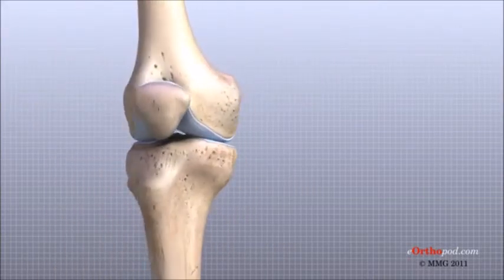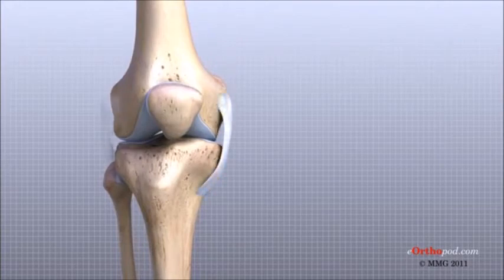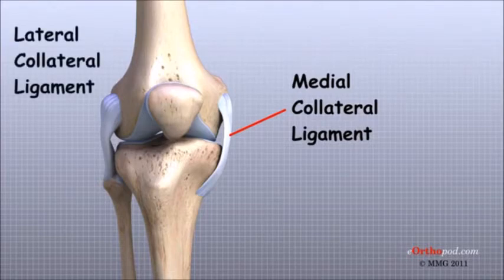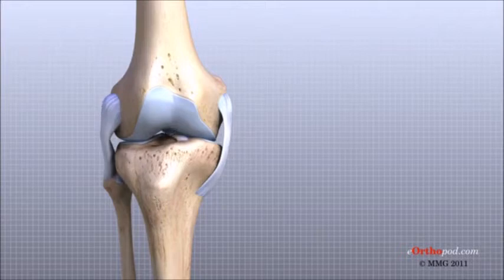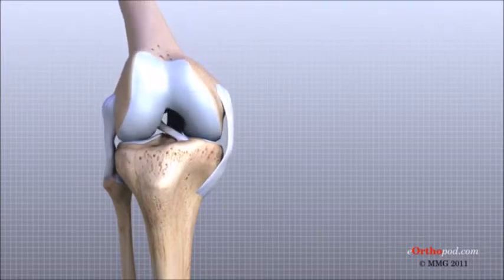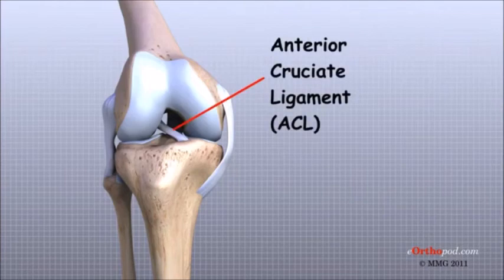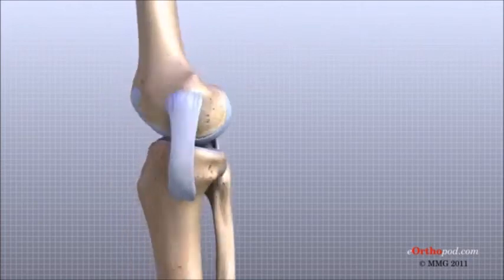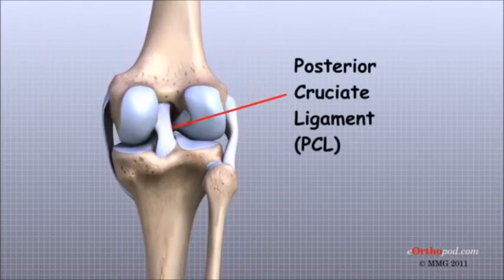Ligaments are tough bands of tissue that connect the ends of bones together. Two important ligaments are found on either side of the knee joint: the medial collateral ligament, or MCL, and the lateral collateral ligament, or LCL. Inside the knee joint, two other important ligaments stretch between the femur and the tibia: the anterior cruciate ligament, or ACL, in front, and the posterior cruciate ligament, or PCL, in the back.